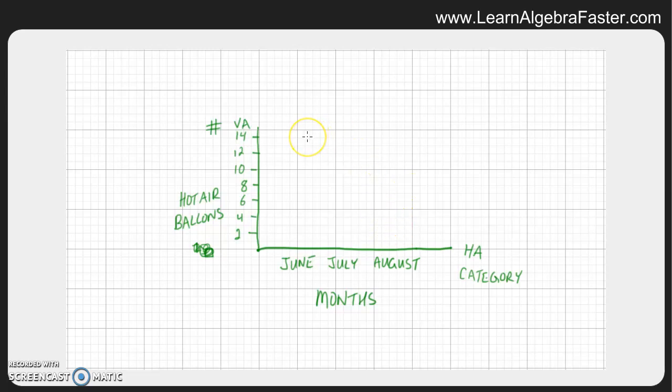Let's say in June, maybe only three get flown. In July, maybe it's a really popular month and there are twelve. And maybe in August it's not as popular, and maybe we only have seven.